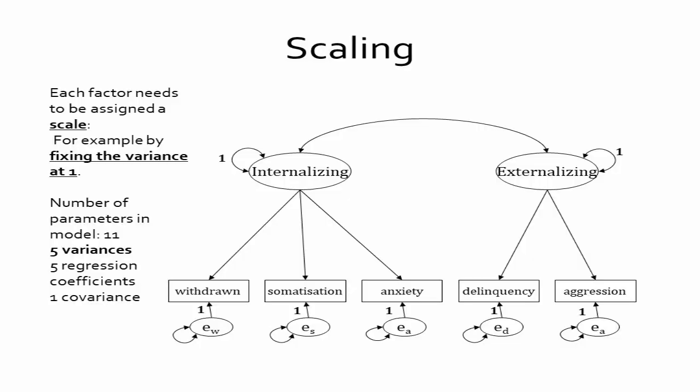Both scaling approaches are valid — the only difference is how we interpret the model parameters. Each factor needs to be assigned a scale. If we scale by fixing variances to one we have standardized normal latent variables. Counting parameters in this model: I see five observed variables each with one residual variance (five parameters), five regression coefficients — three for the internalizing factor and two for the externalizing factor — and one covariance indicated by the double-headed arrow between the two latent variables. That gives eleven parameters total.